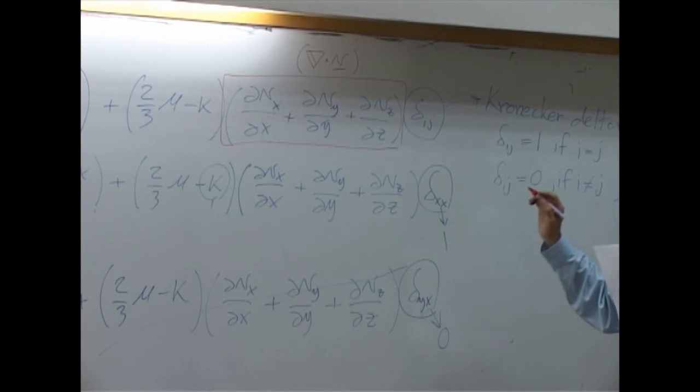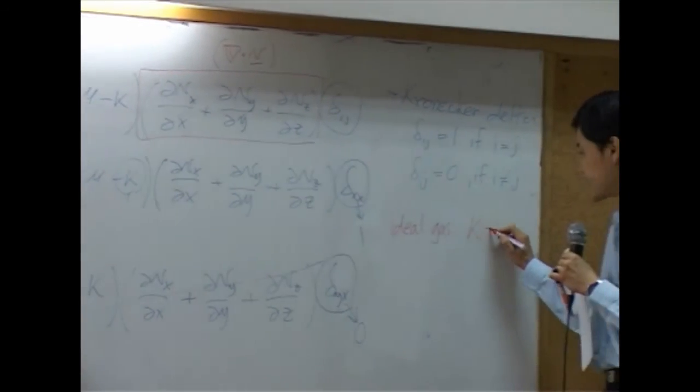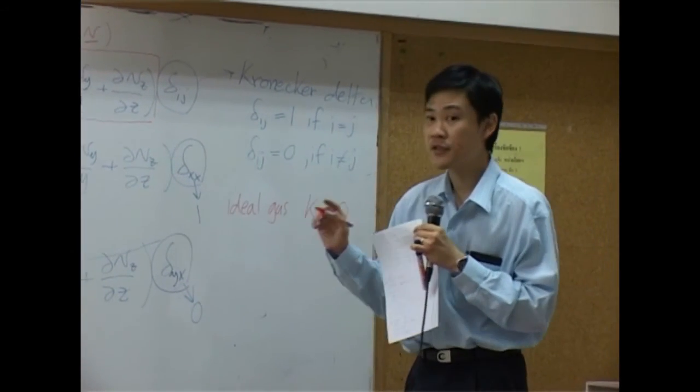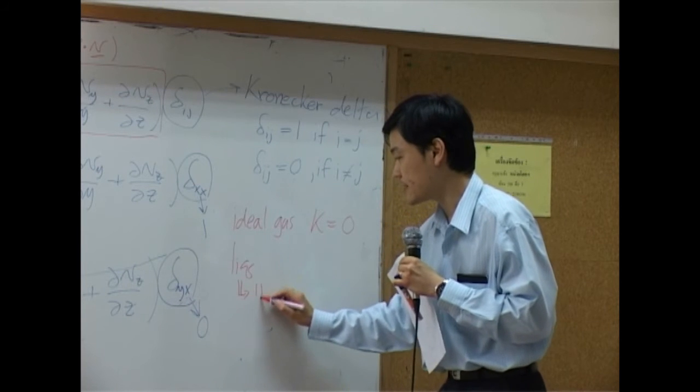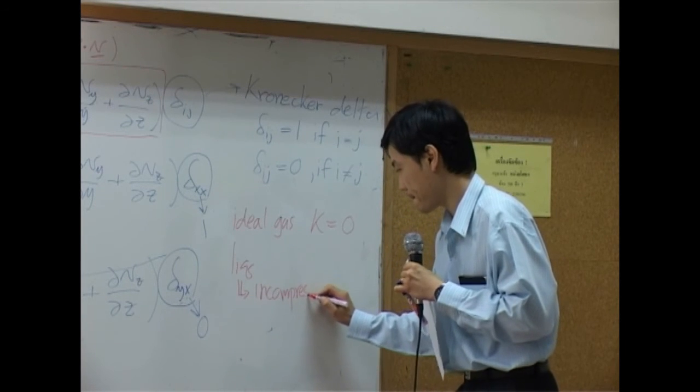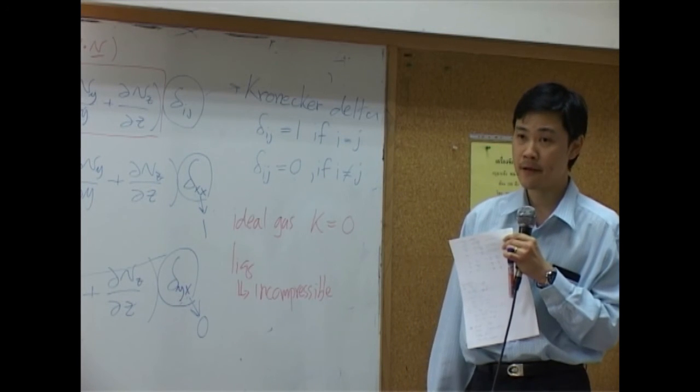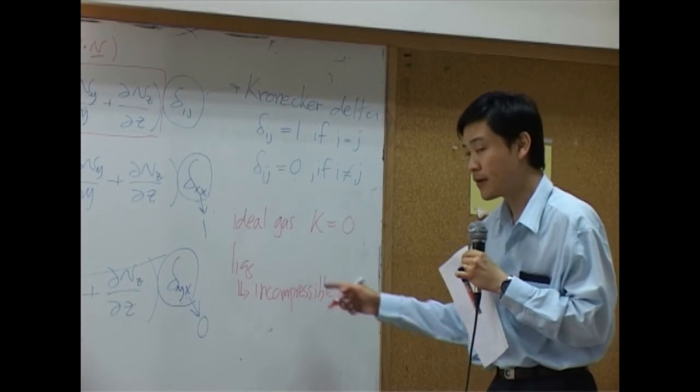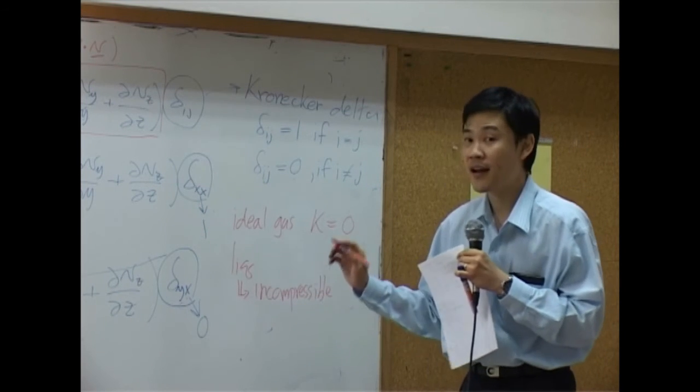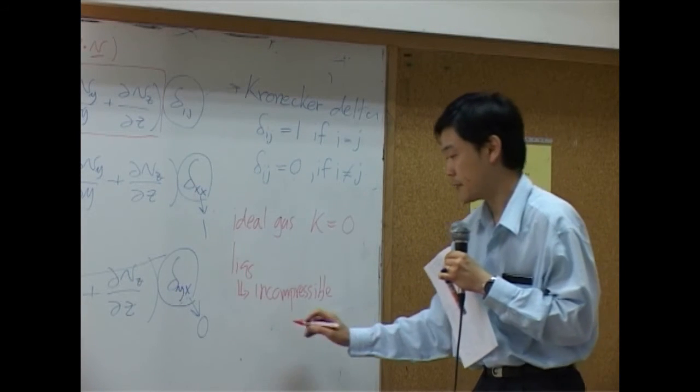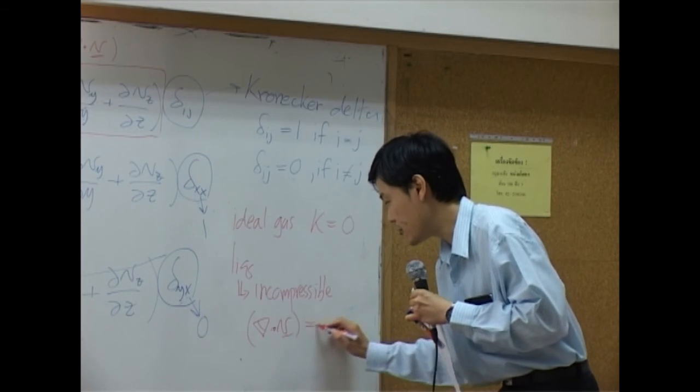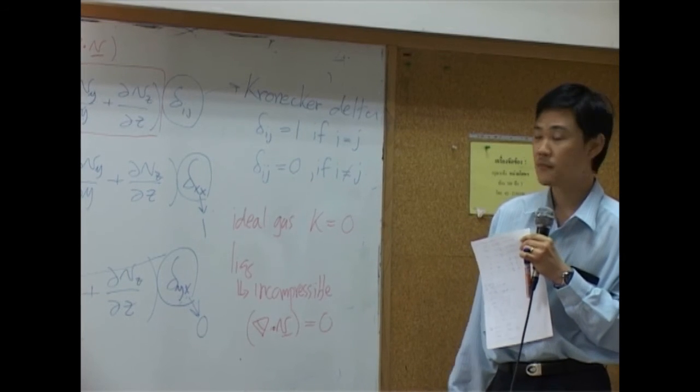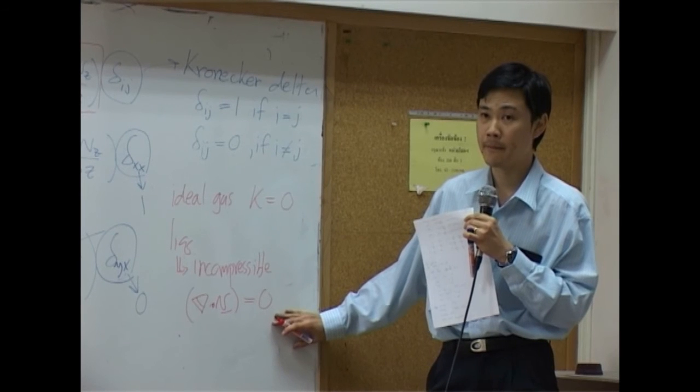Now, if your system of fluid is ideal gas, k is equal to zero. If your system of fluid is liquid, the liquid usually can be assumed to be incompressible. Whenever you have incompressible liquid, del dot V will equal zero. This will be proved in chapter three.